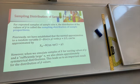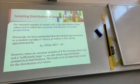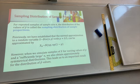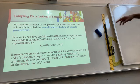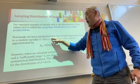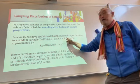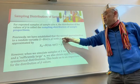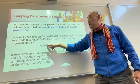It may be more useful to make some probabilistic comments if we know how all P hat values are distributed for some larger value of N. So we're going to look at how we model P hat using a normal distribution. For repeated samples of sample size N, the distribution of the values of P hat is called the sampling distribution of sample proportion. A few lessons ago, we established that the normal approximation to a random variable X with the binomial distribution of N and P, with P approximately 0.5, we can use this.